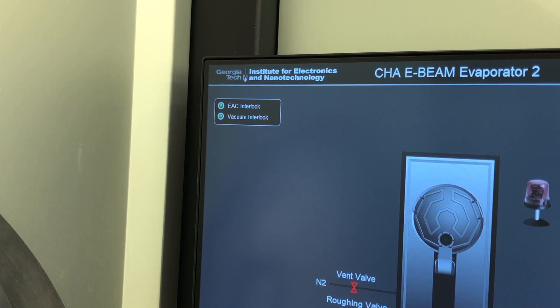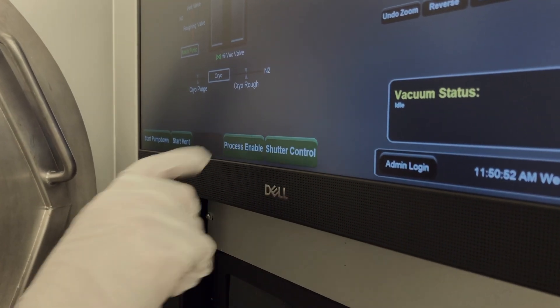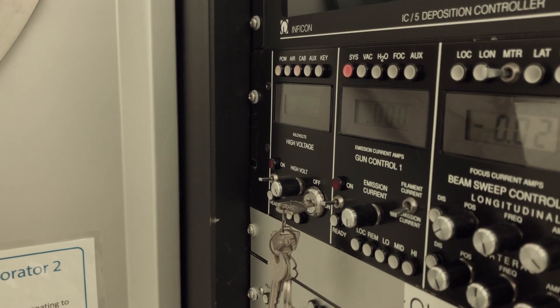If you want to run your process at a low pressure, it may take approximately 30 to 45 minutes to pump down. When the desired pressure has been reached, click the enable process icon on the monitor. The red lights below the deposition controller should illuminate.